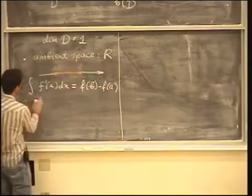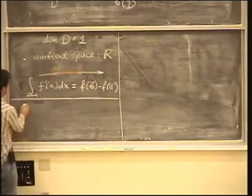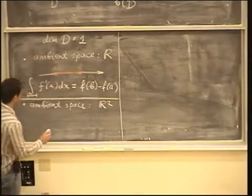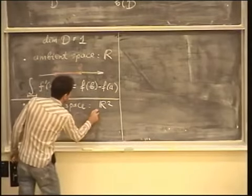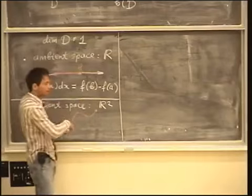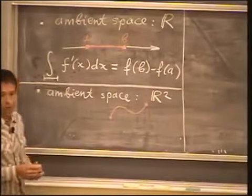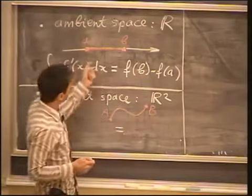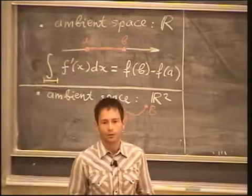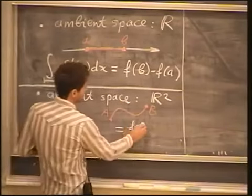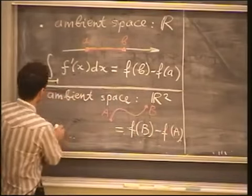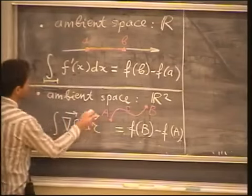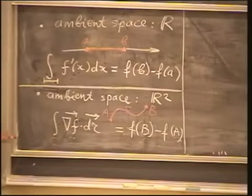Next, we generalize and consider an ambient space which is two-dimensional. Now we're talking about a more general curve on the plane. A curve on the plane can have some wiggling — it doesn't have to be a segment of a straight line. In this case, we have a formula called the fundamental theorem for line integrals. We have a function F and two endpoints, which I'll now denote by capital A and B — these are points on the plane, not just real numbers. On the right, we evaluate the function at those two points. On the left, we take the line integral over curve C of the gradient vector field.